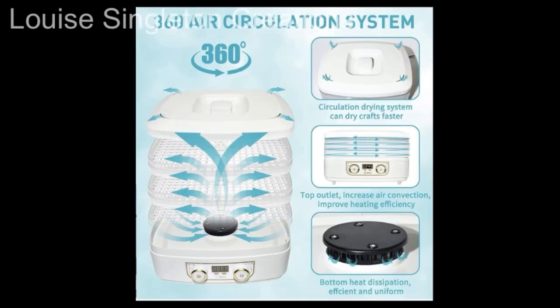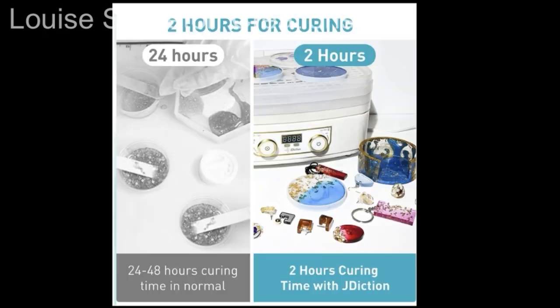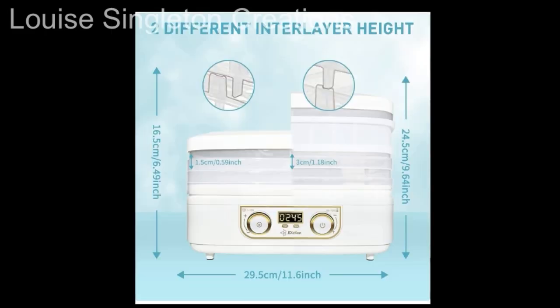But then along comes a parcel from Jaydiction with their resin curing machine and wow, what a game changer. There's no problem with space with this one. Not only does each tray have a larger surface area for things such as coasters and bookmarks, but it's also got a silicon insert which heightens the level of one of the layers so you can put in a mold of up to five centimeters. That's got me quite excited because I tend to do castings of larger things.